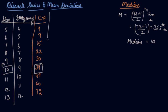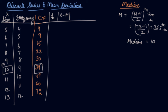Now you will take the deviation: |X minus Median|. This is your X frequency series, and D is the deviation taken from median. So X is 5, your median is 10, giving 5. You ignore the minus sign. The deviations are 5, 4, 3, 2, 1, 0, then 1, 2, and 3.